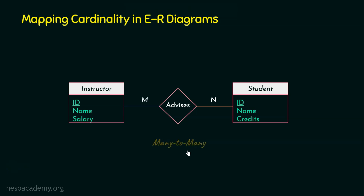The last type is many to many. You can use m on one side and n on the other side, where m and n may or may not be equal. The explanation: an instructor may advise many students, and a student may have many advisors — it is many on both sides. Another example: many employees can work on many projects. When there is no arrow on either side, it is obviously many to many.